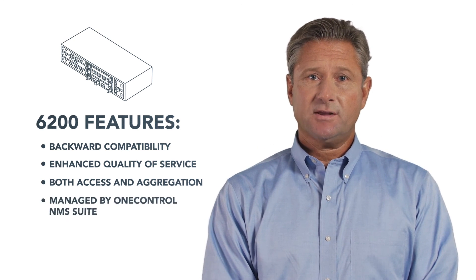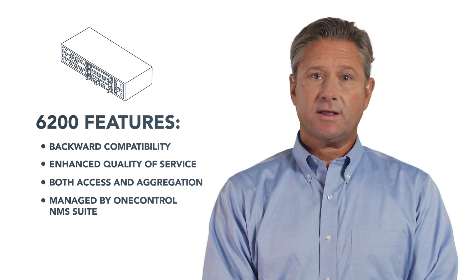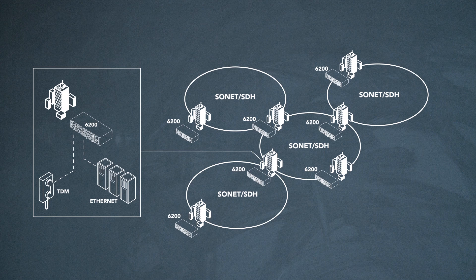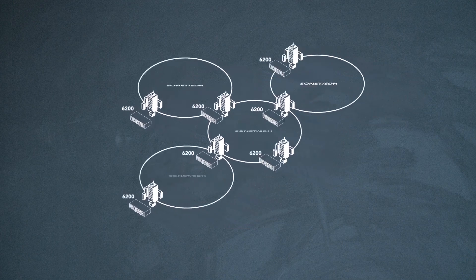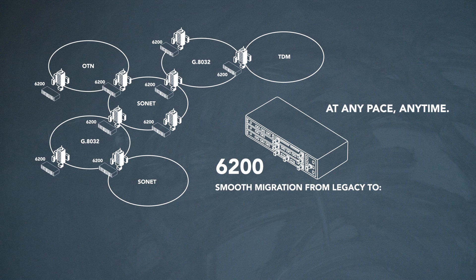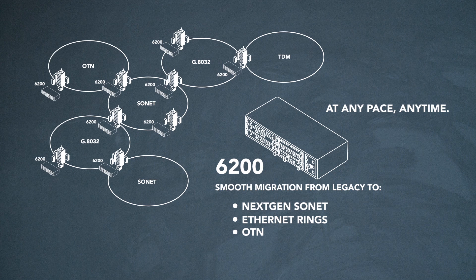The 6200 is fully managed by Ciena's OneControl NMS suite. The utility can start with Sonnet to leverage the existing TDM network elements with far greater scalability, as seen in the first diagram. This will enable a utility to leverage the OT infrastructure behind the Sonnet network. The 6200 is module-based and flexible, and can be configured to support multiple customer requirements. The utility can deploy either Ethernet or OTN technology when they're ready, simply by adding line cards or packet fabric to the chassis.